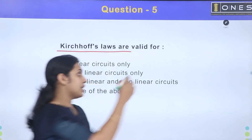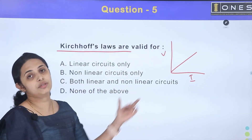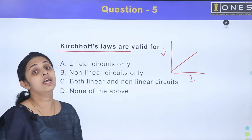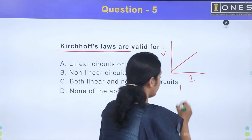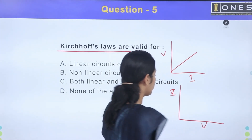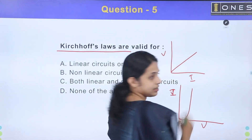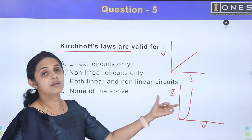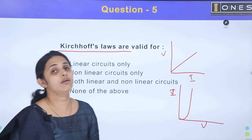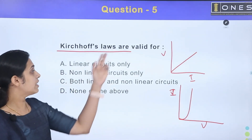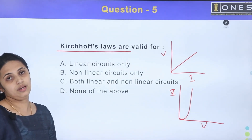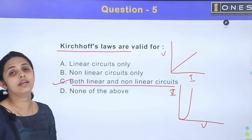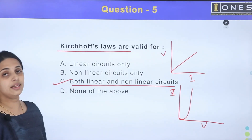In a linear circuit, voltage is proportional to current, giving a linear graph. In a non-linear circuit — for example, a diode circuit — the voltage-current relationship is not linear. Kirchhoff's laws apply to both. So the correct answer is option C: both linear and non-linear circuits.